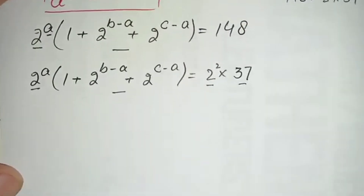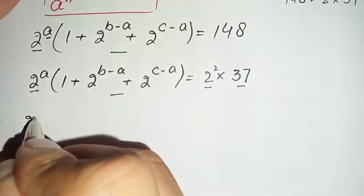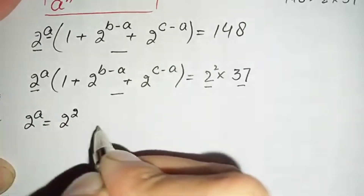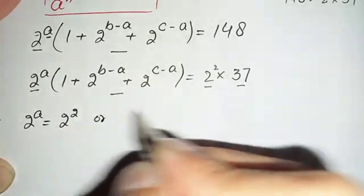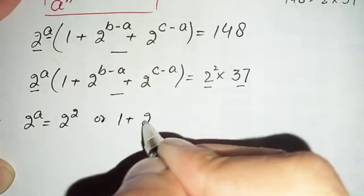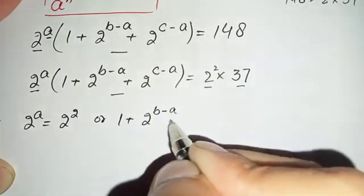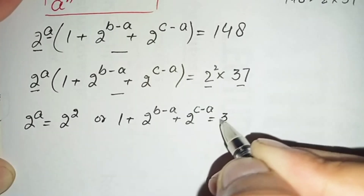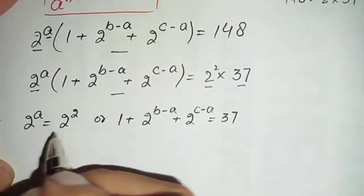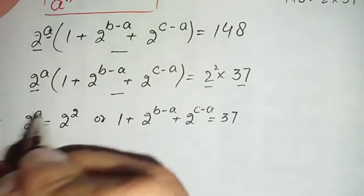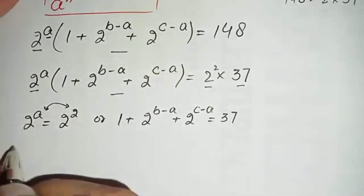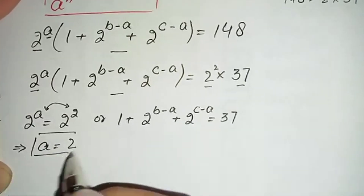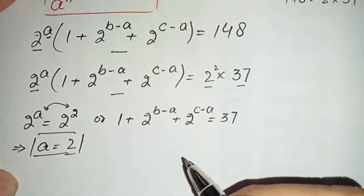Comparing the even expression with the even number and the odd expression with the odd number, we get two equations. The first equation is: 2 raised to power a equals 2 raised to power 2. Since the bases are the same, we compare the powers, giving us a equals 2. This is the value of our first variable.